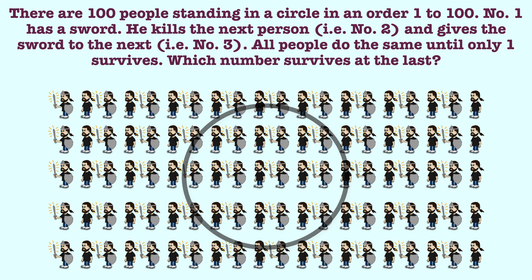Let me repeat the problem. There are 100 people starting from one to 100. Number one has a sword, he kills the next person — number two — and gives the sword to the next — number three. All people do the same until only one survives. You are supposed to identify which number survives at the last. Feel free to pause the video and try yourself before checking the solution.